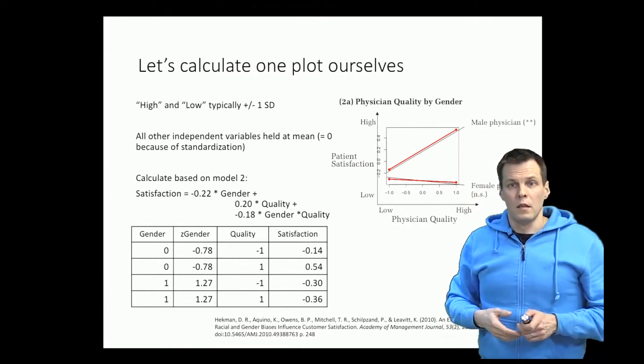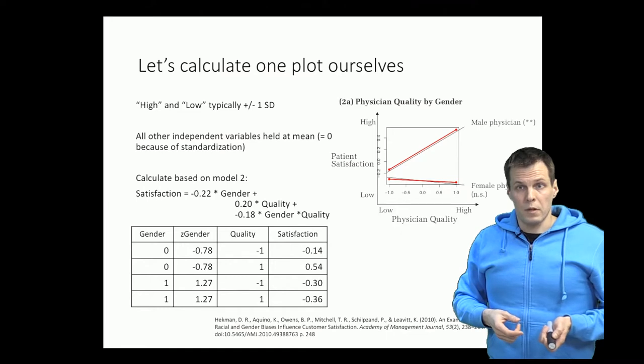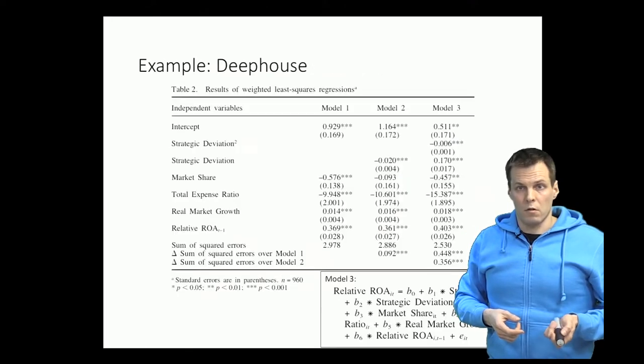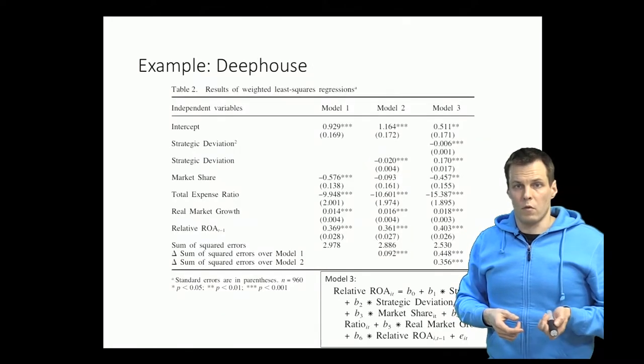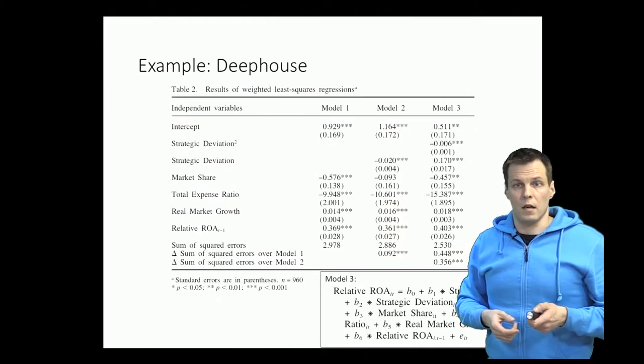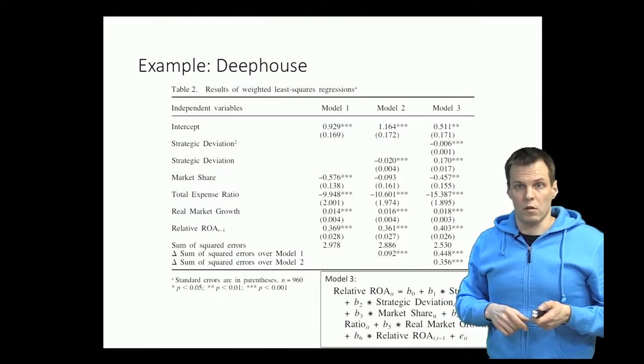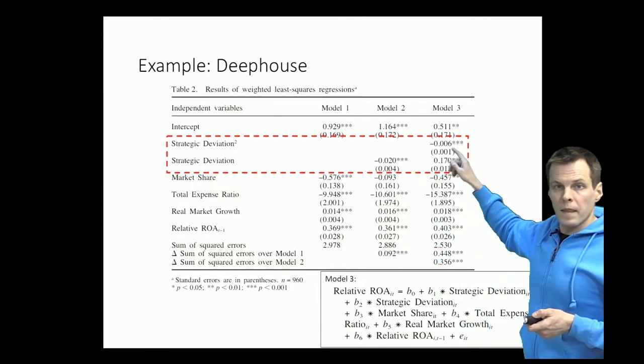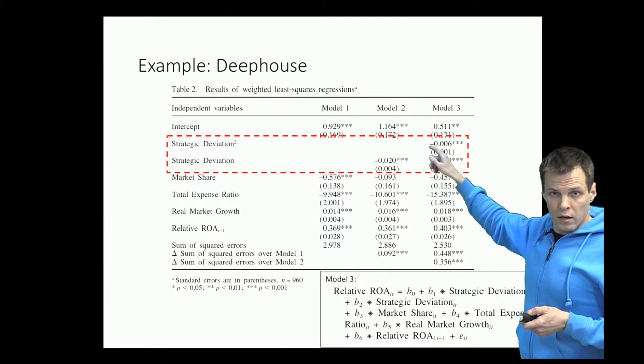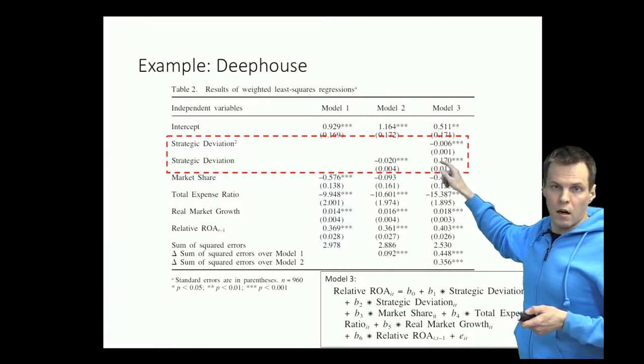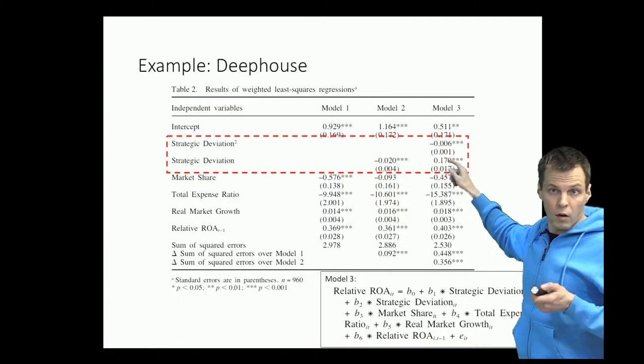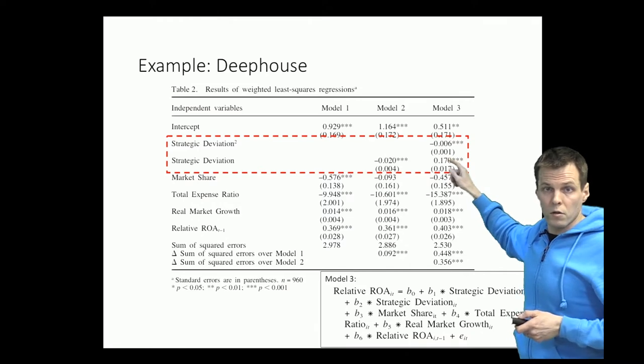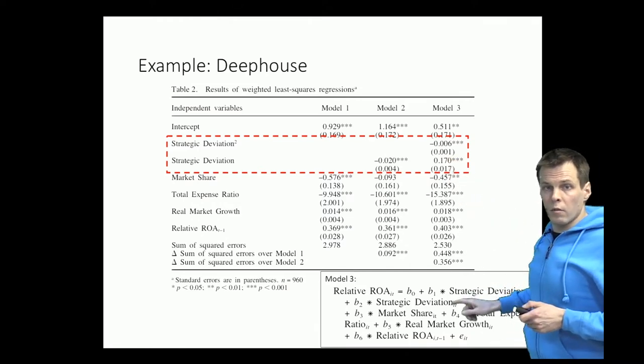Let's take a look at Deep House's paper that has a different kind of interaction model. So Deep House's paper doesn't have a moderation model. Instead, they have this curved effect model. So they have this U-shaped model. And again, interpreting the strategic deviation squared effect, the deviation is nearly impossible without plotting how the line goes. So we need to take a look at the model 3 here.